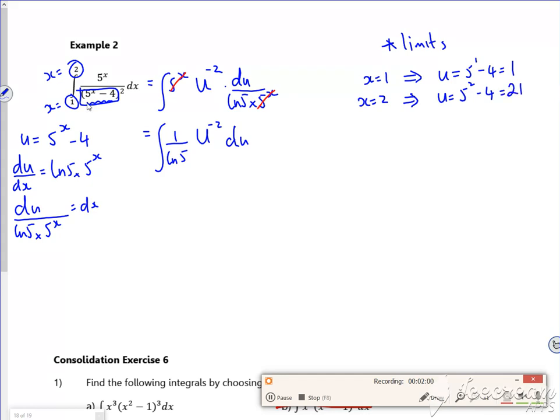So my new limits are going to be 1 for the lower limit, 21 for the upper limit. So if I integrate it, the 1 over log 5 is just a number, don't worry about it. Then I've got times by u to the minus 1 over minus 1, between 1 and 21.